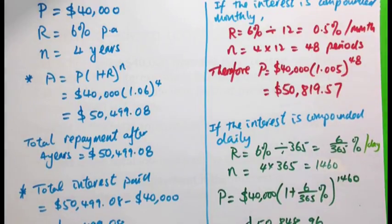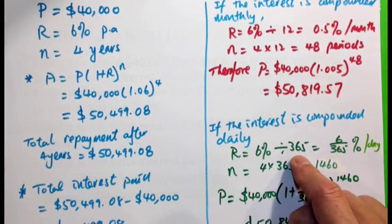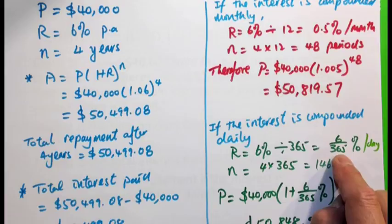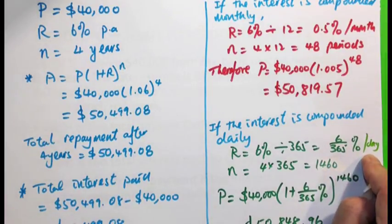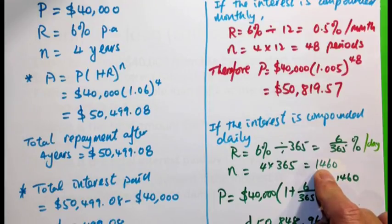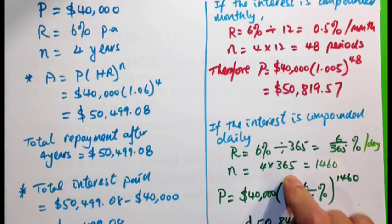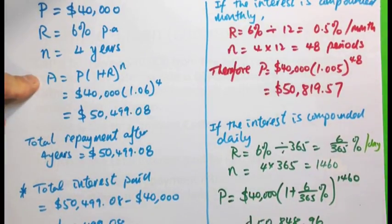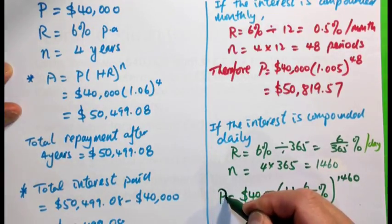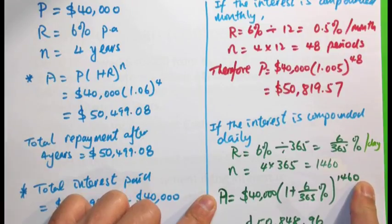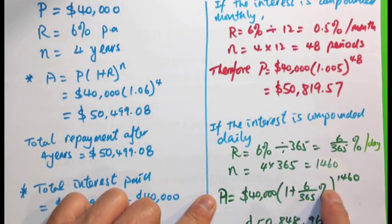What if the interest is compounded daily? The 6% per annum rate is divided by 365, giving an interest rate of 6/365% per day. The period is 4 years times 365 days, which is 1,460 days. Note that we don't consider leap years — we take a year as 365 days. Substituting into the formula: A equals 40,000 times (1 plus 6/365%) to the power of 1,460, giving $50,848.96. Use your calculator to work this out.